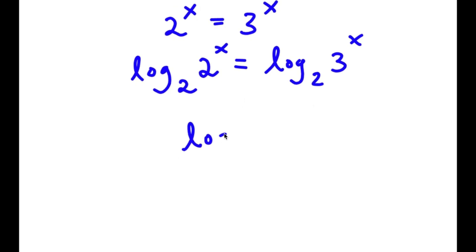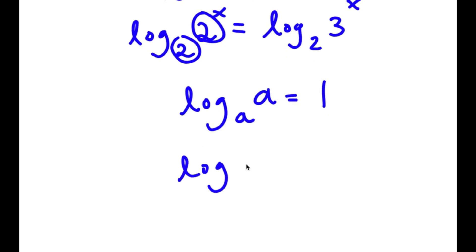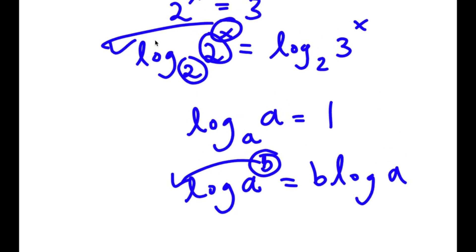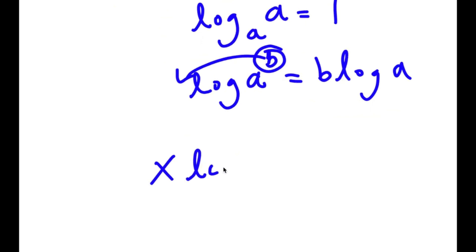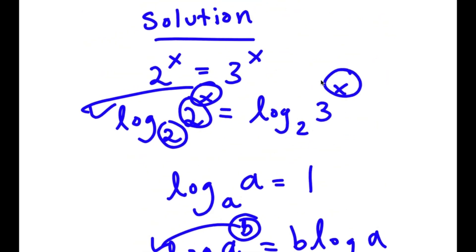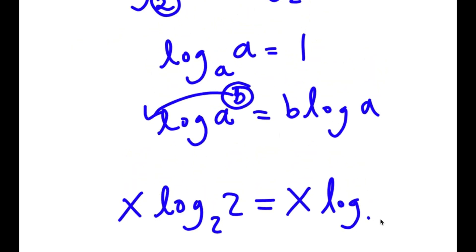If I have something in the form log base a of a, this is simply equal to 1. So as you see here, we have log base 2 of 2. But before I cancel these out, if I have something in the form log base a to the power of b, I can move this exponent b to the front, so it equals b times log a. In this case, I have x as my exponent, so I can move this to the front. So now I have x times log base 2 of 2 is equal to x times log base 2 of 3.